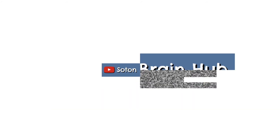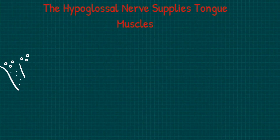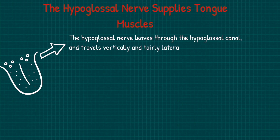The hypoglossal nerve supplies all of the extrinsic and intrinsic muscles of the tongue with the exception of the palatoglossus. To finish off this video, we are going to cover the path it takes to supply these. The hypoglossal nerve passes through the hypoglossal canal and travels vertically and fairly laterally in the neck to reach the angle of the mandible.